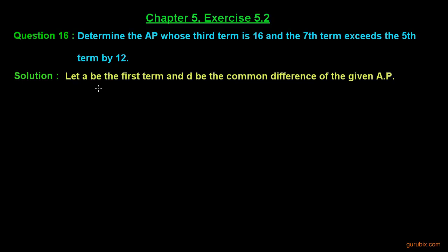First, we let A be the first term and D be the common difference of the given AP. We know that if A is the first term and D is the common difference, then we can write the third term as A plus 2D, and the third term is given as 16.